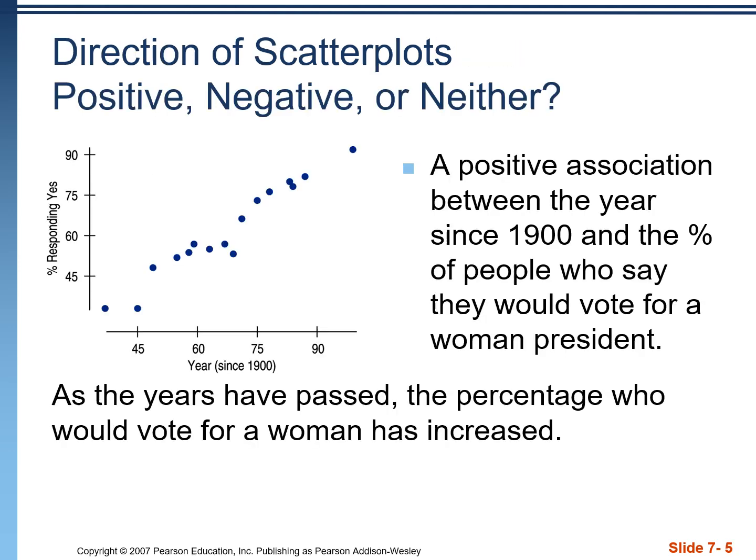When we address the direction, we want to say: is it positive, is it negative, or is it neither? Positive is going uphill, negative is going downhill. Neither means it's flat, or we just don't see any association or correlation between the two variables.